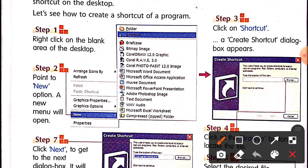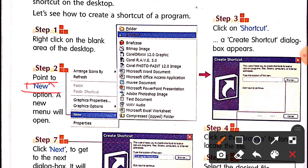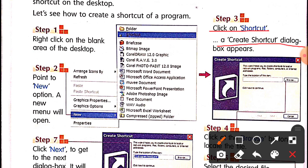Here are the steps to create a shortcut of a program. Step one: right-click on the blank area of the desktop. Step two: point to New — a new menu will open. Then click on the New option. Step three: click on Shortcut — the Create Shortcut dialog box appears.